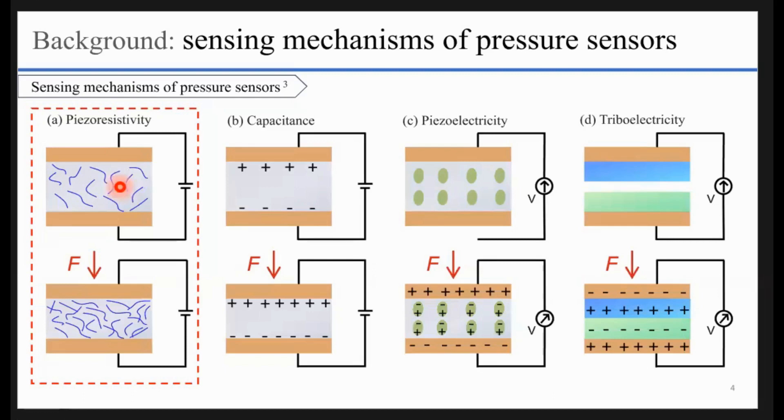When pressure is applied on the sensor, the sensor will be compressed. Some of the conductive paths will break, and some new conductive paths will be formed. This will change the resistance of the whole sensor, and that's basically how this type of sensor works.